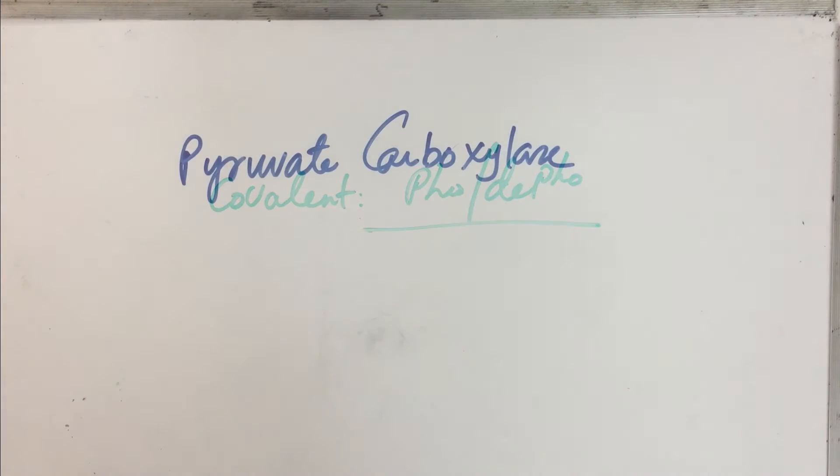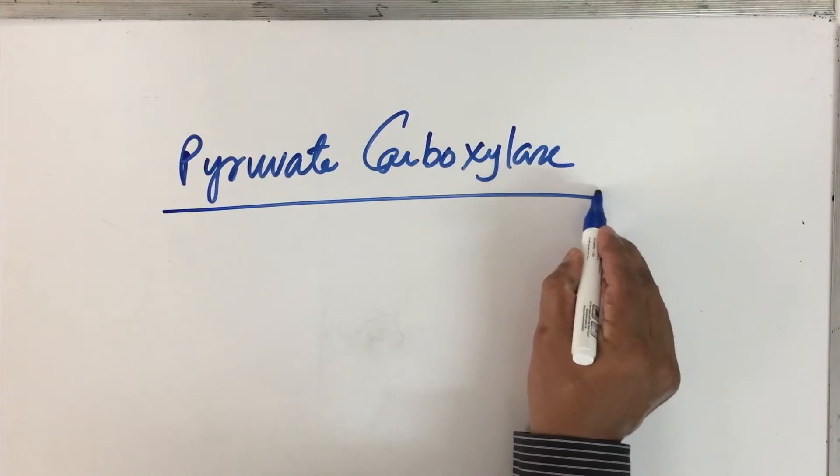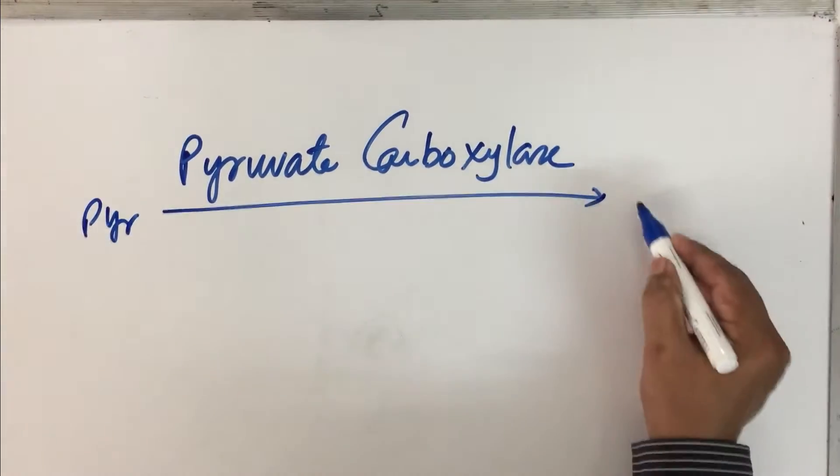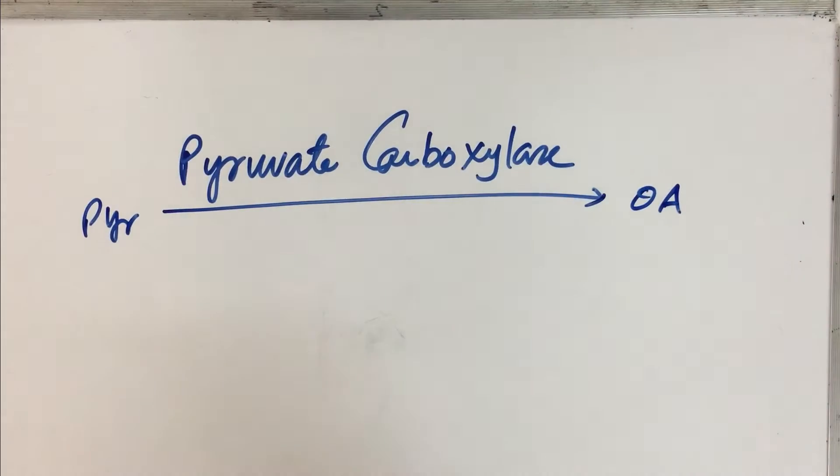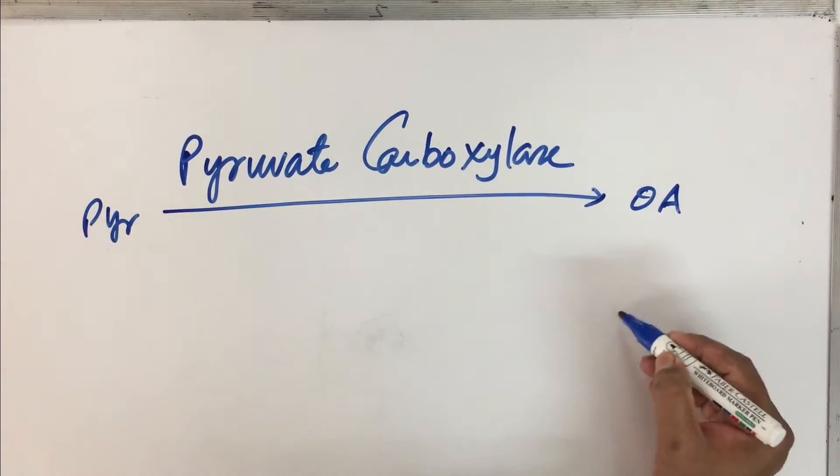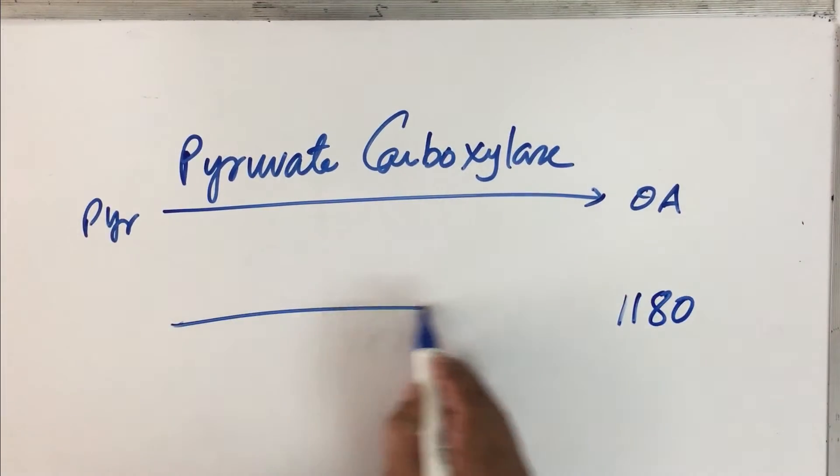Let us begin our discussion of this coordinated regulation with the first enzyme, which is pyruvate carboxylase enzyme, which will convert pyruvate into oxaloacetic acid. Remember this is the enzyme which is present in the mitochondria. Now this enzyme is mostly regulated with the help of allosteric modification. Look at this enzyme. Some knowledge about this enzyme is so crucial. This is an enzyme that has got 1180 amino acids.